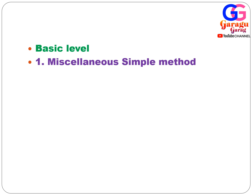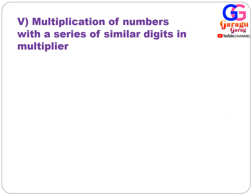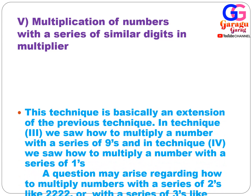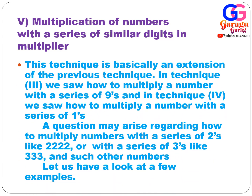In this session, at the basic level, we cover the miscellaneous simple method — multiplication of numbers with a series of similar digits in the multiplier. This trick belongs to multiplication where the multiplier contains a similar repeated digit. This technique is basically an extension of the previous techniques: technique three showed how to multiply with a series of nines, and technique four showed how to multiply with a series of ones.